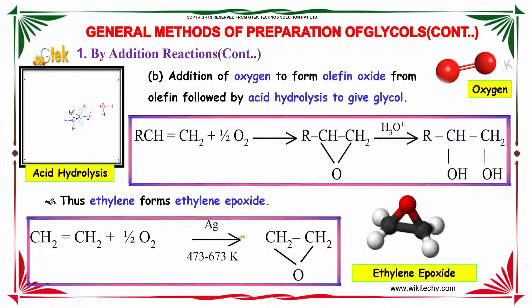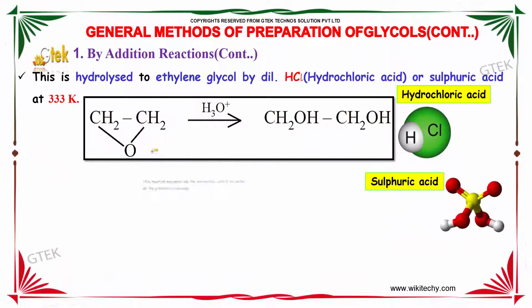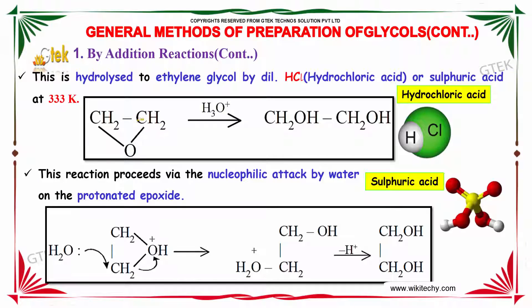The epoxidation is carried out in the presence of silver (Ag) catalyst at about 473 to 673 Kelvin. The product formed is then hydrolyzed to ethylene glycol by addition of dilute hydrochloric acid or sulfuric acid at 333 Kelvin. This reaction proceeds via nucleophilic attack by water at the protonated epoxide.